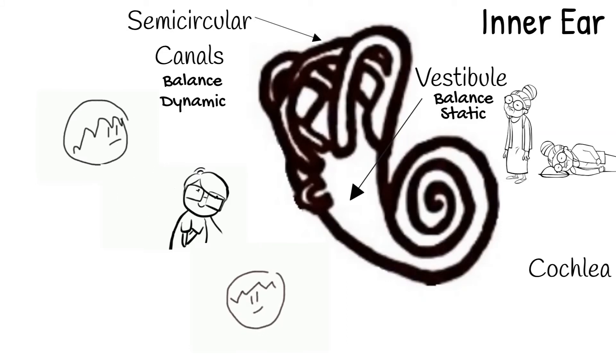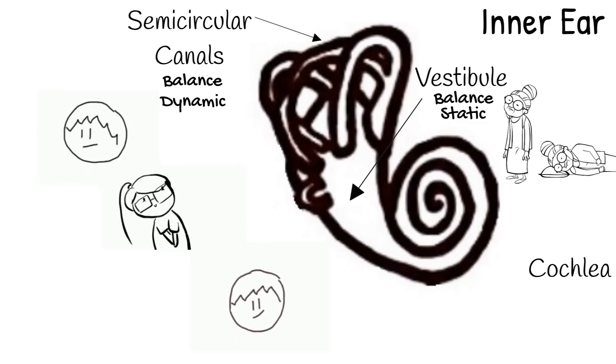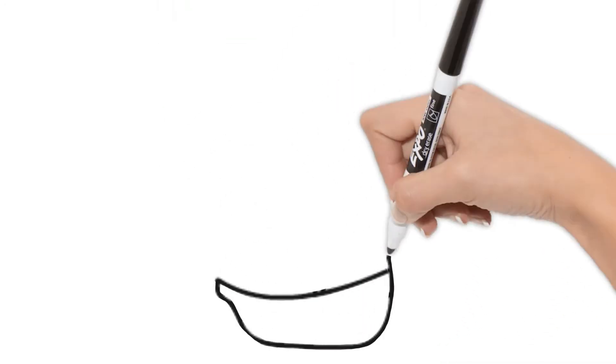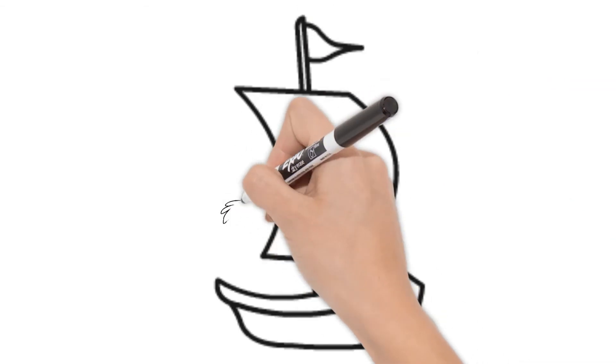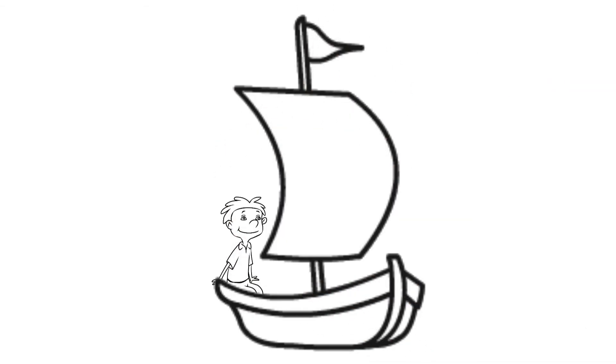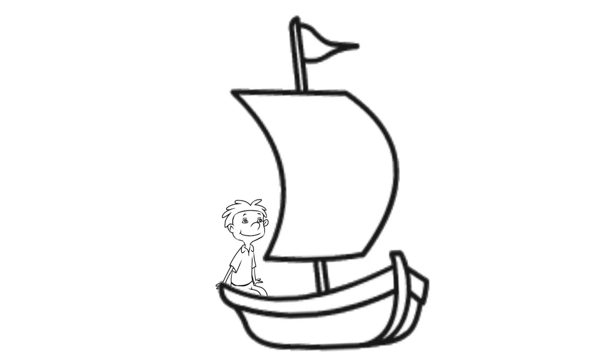Motion sickness happens when your body and ears tell your brain different things. For example, sitting on a boat your body is telling your brain you're sitting and not moving, but your ears tell your brain that you are moving.